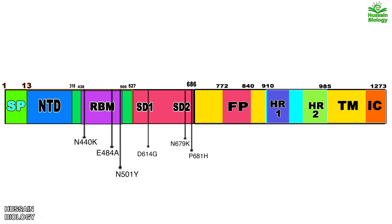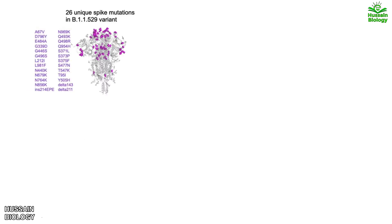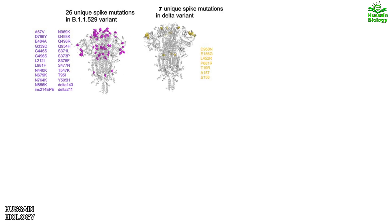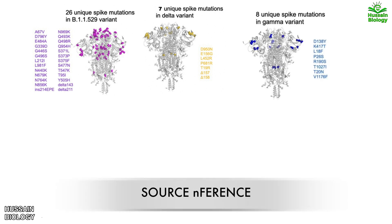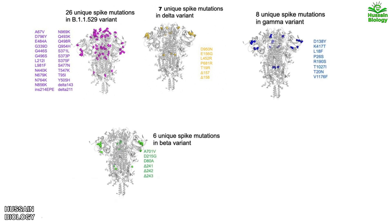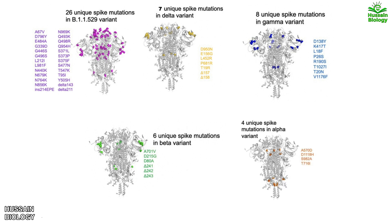Now let's look at the unique spike mutations specific to each variant of concern. The Omicron variant has 26 unique spike mutations not present in any prior variant. The Delta variant has 7 unique mutations, Gamma has 8, Beta has 6, and Alpha has 4 unique mutations. All mutations have been shown in the diagram.